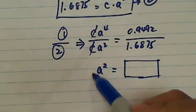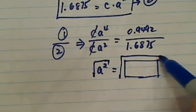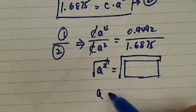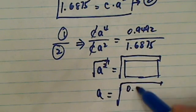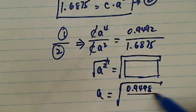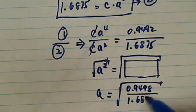And from there, all you have to do is take a radical root, right. And then this one, a is equal to radical root of 0.9492 divided by 1.6875.